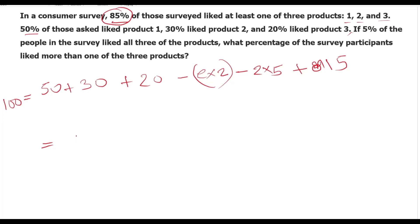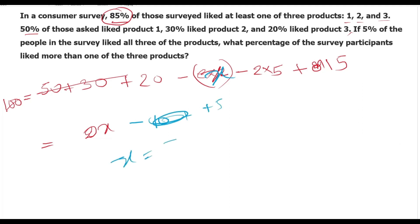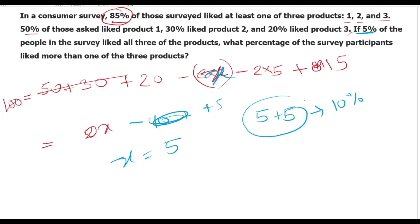So x is equal to x minus 10 plus 15 plus 5 — then x equals 5. Exactly 2 is equal to 5. So exactly 2 products liked is 5%, and all 3 liked is 5%, so total 10% liked more than one product.